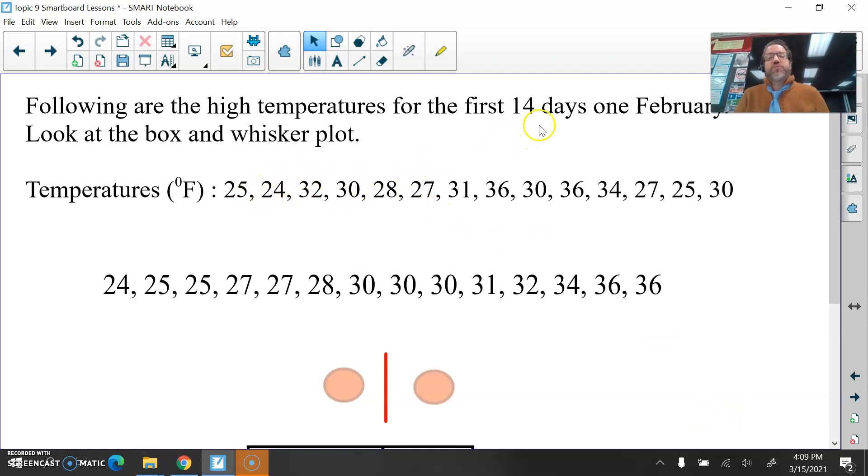So let's talk a little bit more here about this. Let's say I have the high temperatures for the first 14 days one February. Here they are. February 1st was 25 degrees for a high, February 2nd was 24, February 3rd was 32 degrees, oh my goodness how nice, and so on and so forth for the first 14 days in February. Now I want to make a box and whisker plot here, and so I want to find the median of the entire set of data.